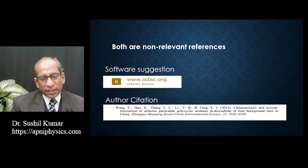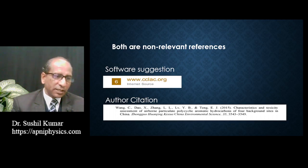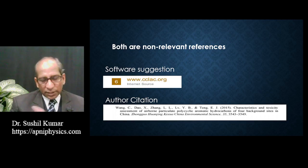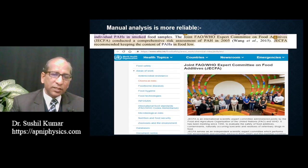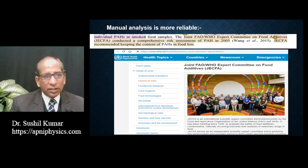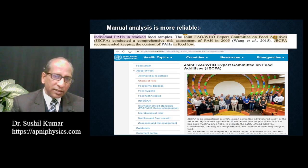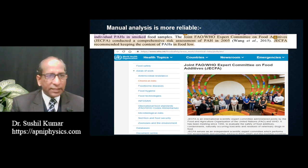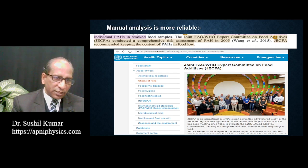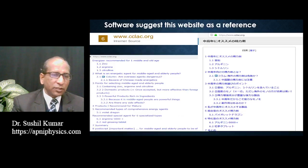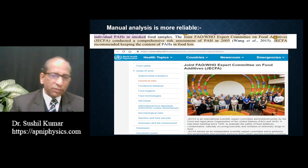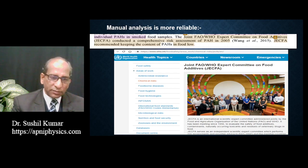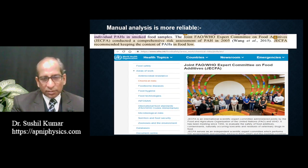Both references suggested by the software and quoted by the author were non-relevant. I copied the statement and found it is related to the WHO website, where it clearly says 'Joint FAO/WHO expert committee on food additives.' The software should have suggested this WHO website instead of a Chinese-language site. This raises a question about the validity of the software as well. So everything needs to be checked manually and practically — the machine is not always reliable.